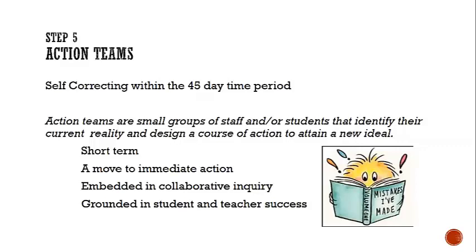Action teams are a living process within the 45 days that allow you to self-correct based on the evidence you regularly collect. For example, in our PE department at Sunnyside, we were continually taking kids out of class to waive PE requirements so they could take core classes to make up deficiencies. PE teachers felt we weren't paying credence to their program, so they created an action team on their own. By sitting down with students and problem-solving, they found that after-school programs with alternative choices for PE credits engaged students who didn't want to participate in the regular program.